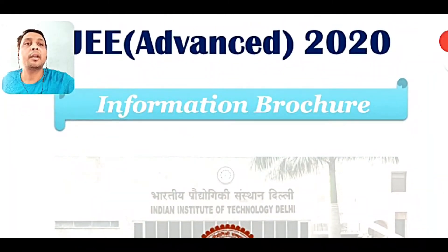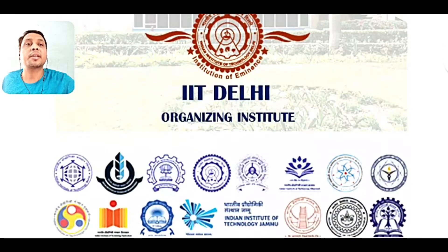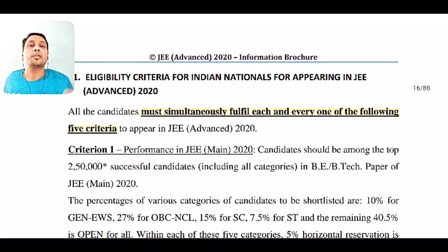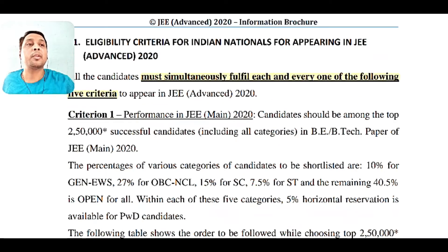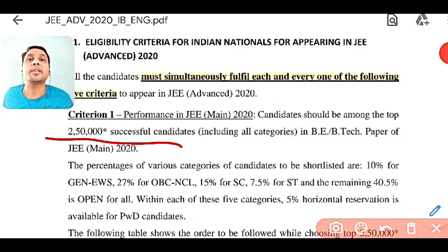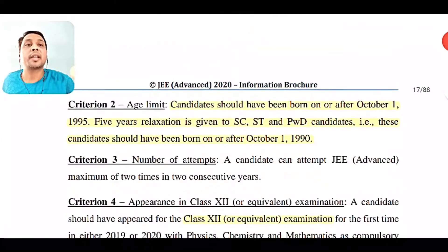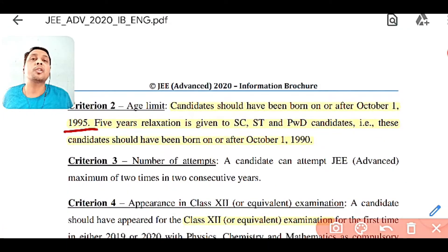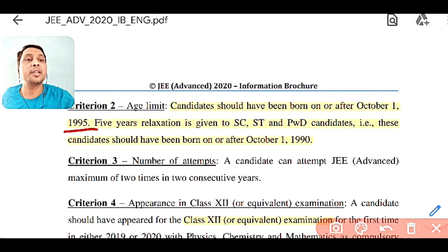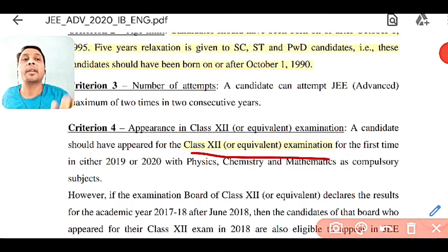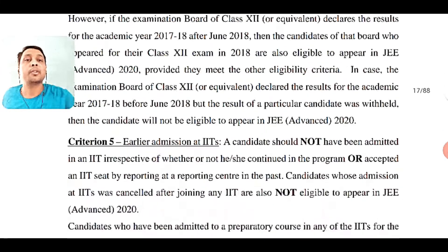This is the JEE Advanced brochure — you can find it on the JEE Advanced website, or I will provide the link in the description. Going to page number 15: the eligibility criteria for appearing in JEE Advanced requires fulfilling five criteria. First, you must sit for JEE Main — the top 2 lakh 50,000 successful candidates in JEE Main can appear for JEE Advanced. Second, you should be born on or after 1990. Criteria number 4 states class 12 or equivalent exam, and that equivalent exam is your diploma — diploma is also eligible.